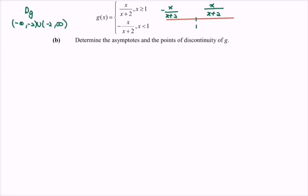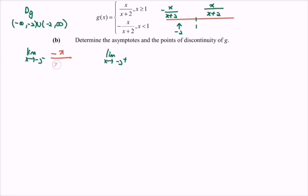We explore the behavior near x equals negative 2. We consider the limit as x approaches negative 2 from the left, and the limit as x approaches negative 2 from the right. Since negative 2 lies in the region x less than 1, both limits use the function negative x over (x plus 2).